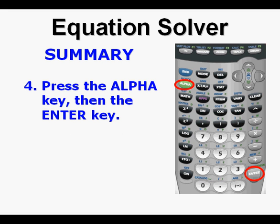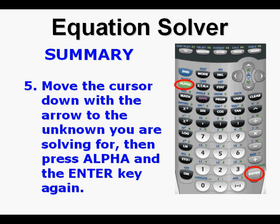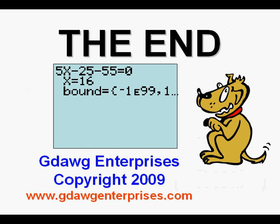Third, press the Alpha key, then the Enter key. Move the cursor down with the arrow to the unknown you are solving for, then press Alpha and the Enter key again. That was our introductory lesson. We plan to have further lessons to show how you can use the equation solver to solve equations of increasing difficulty and complexity. Thanks for viewing, and we will see you soon.